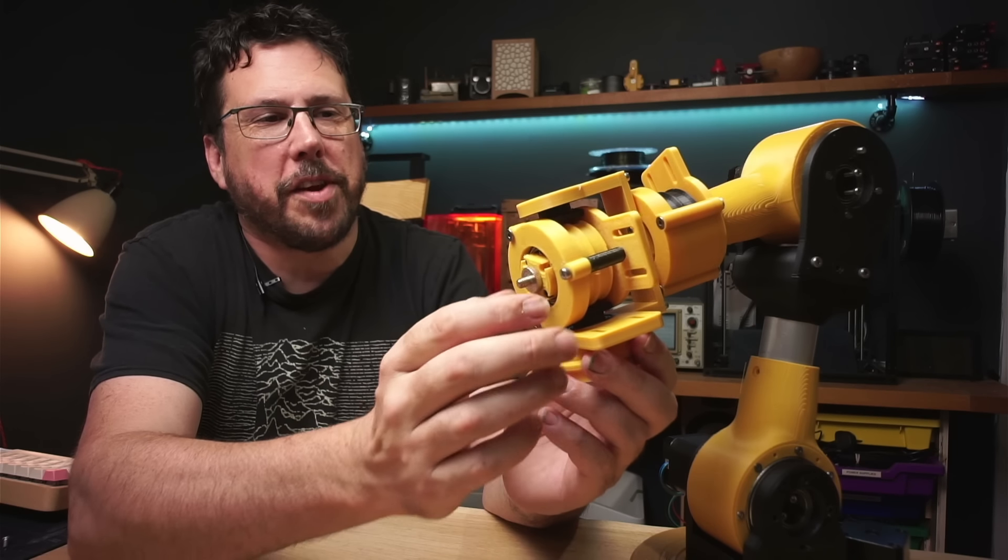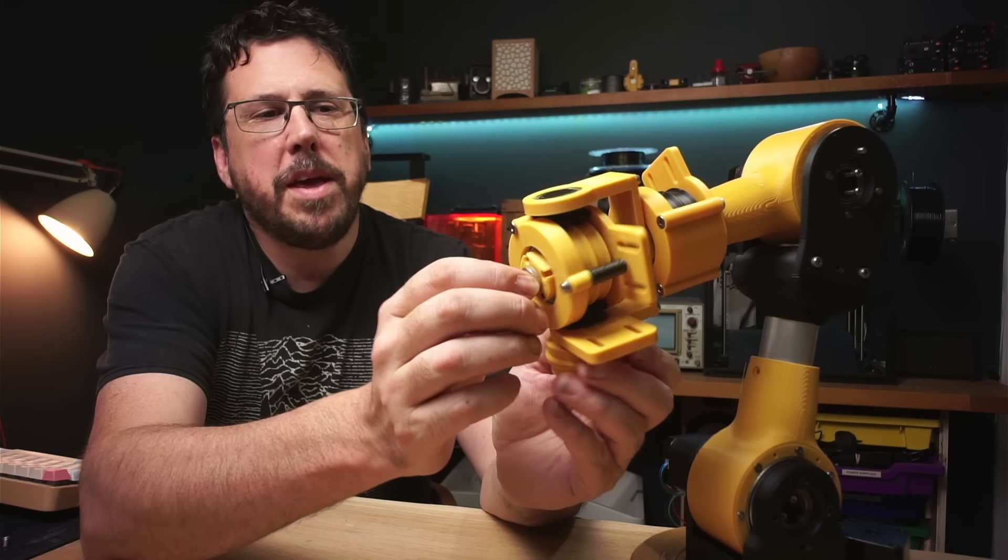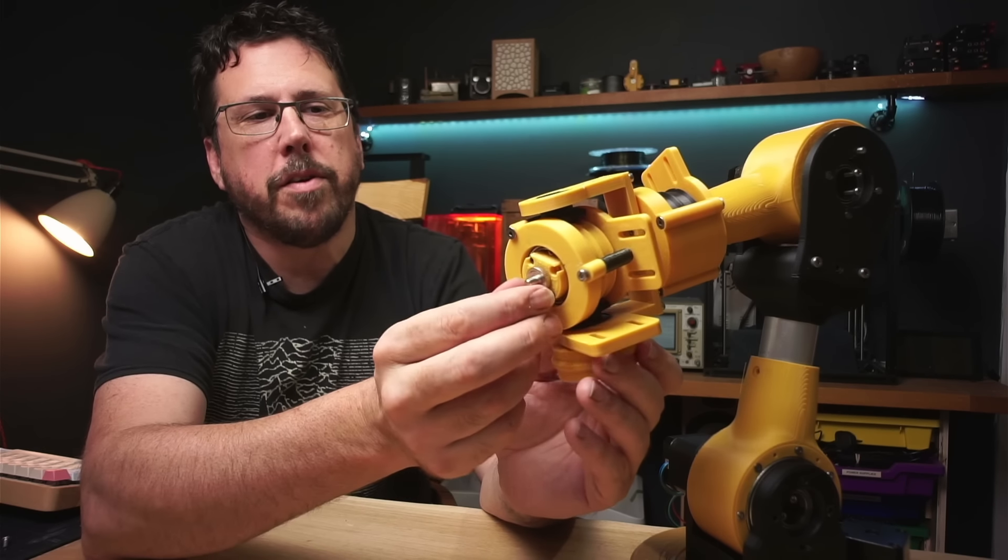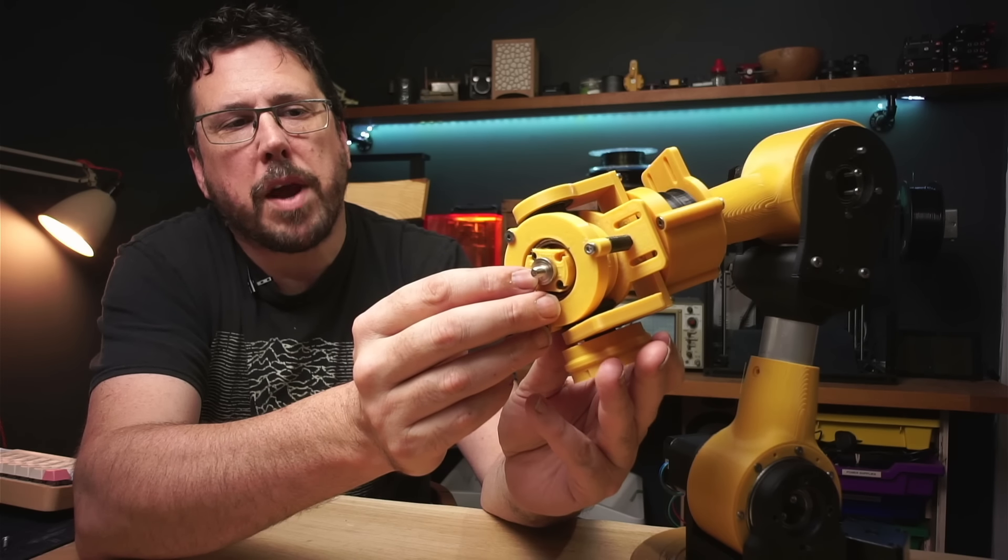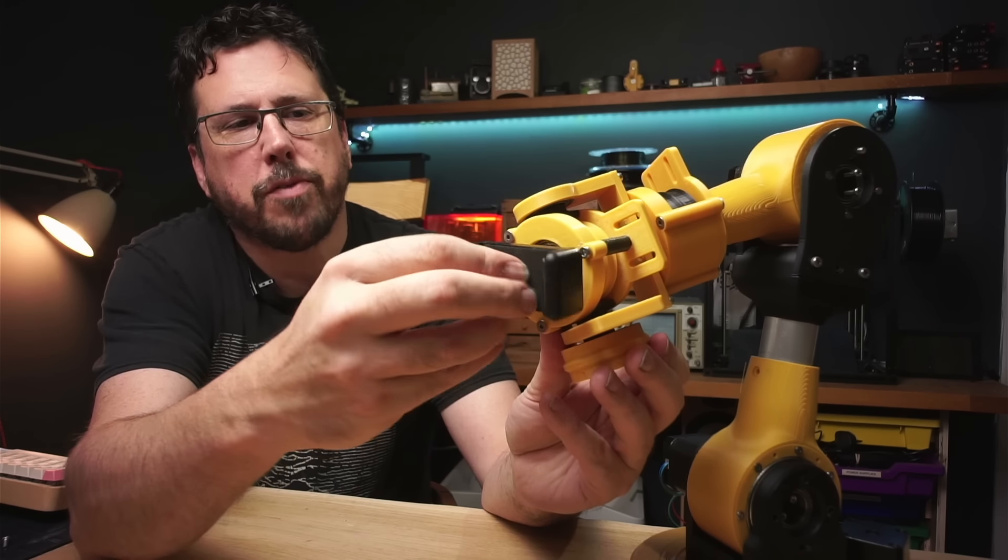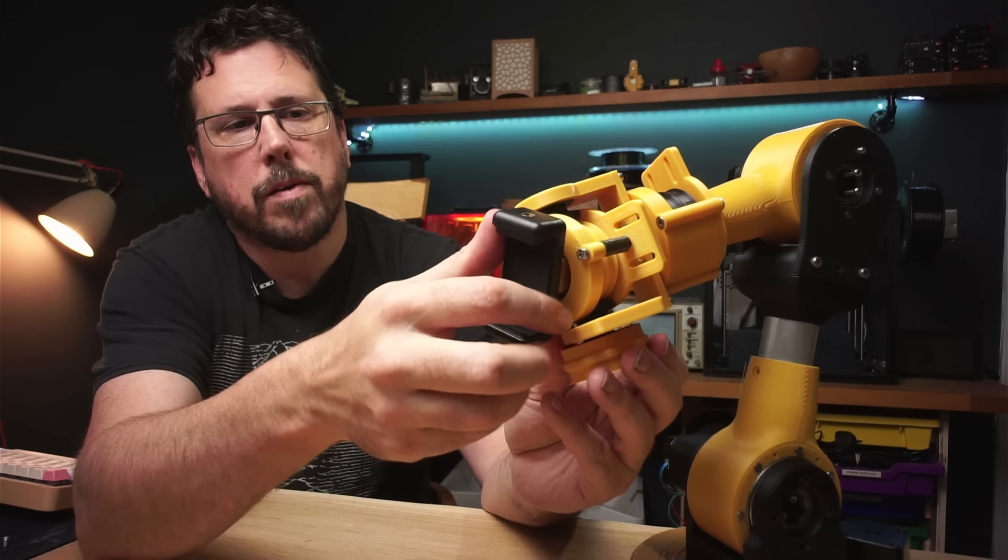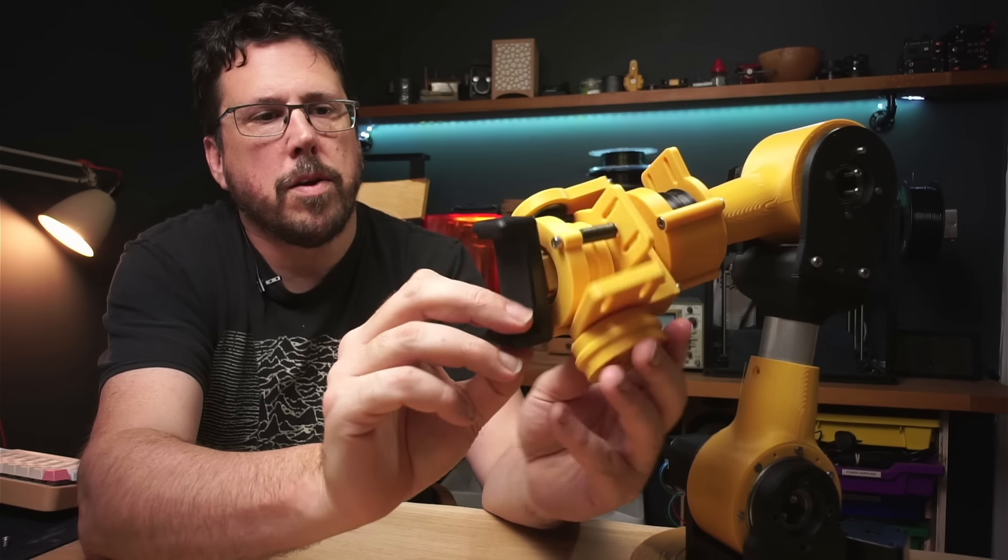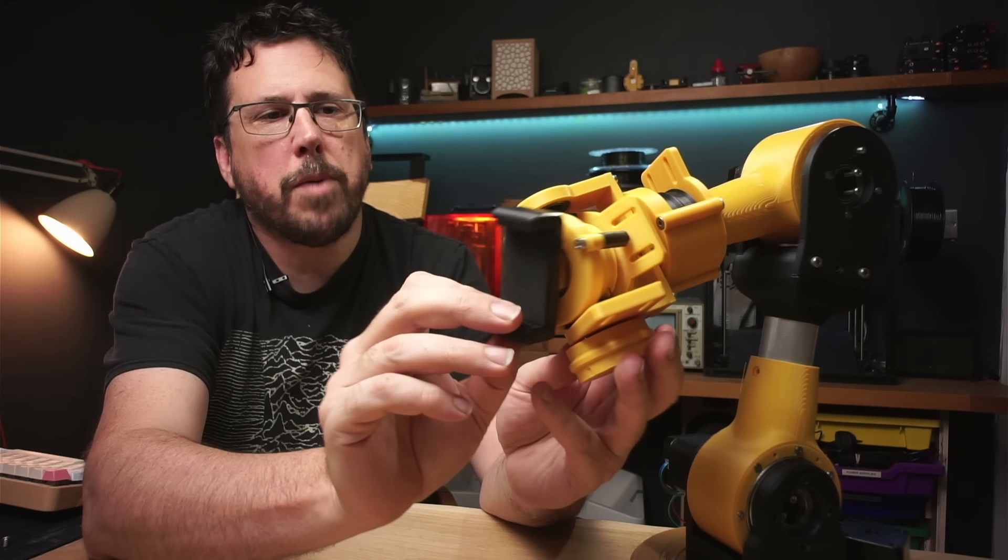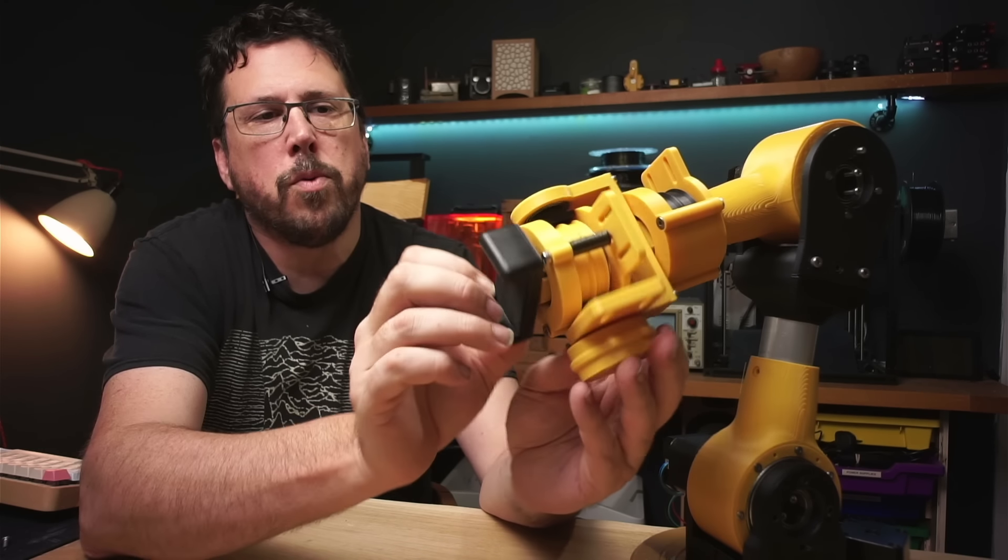I've attached the last axis and now you can see we've got three degrees of freedom. It might be easier to see once we put something on the end. I've got a quarter 20 mount for a camera on the end of the last axis and I'm just going to quickly attach a foam mount to it. So now you should be able to see we can move this to pretty much any angle that we want.